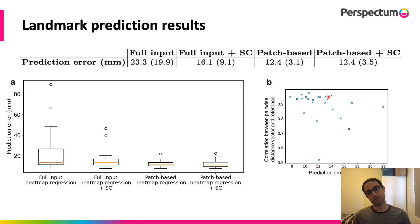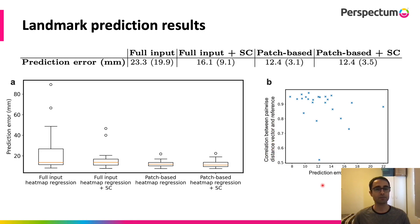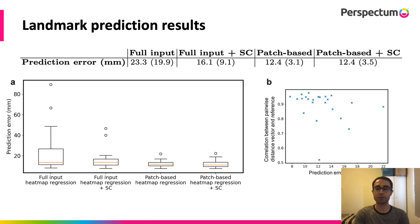This figure shows the correlation between the pairwise distance vector for the landmarks in a test sample, correlated with the distance vector from the reference training set. When plotted against the prediction error, there is a clear trend, showing that it could potentially be used to identify test cases where the model may not have performed well.